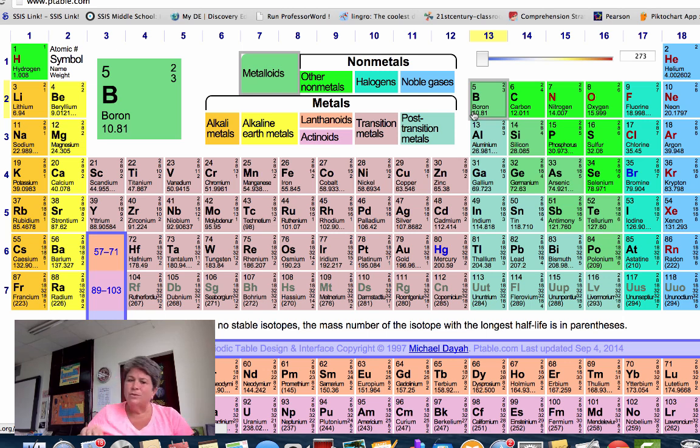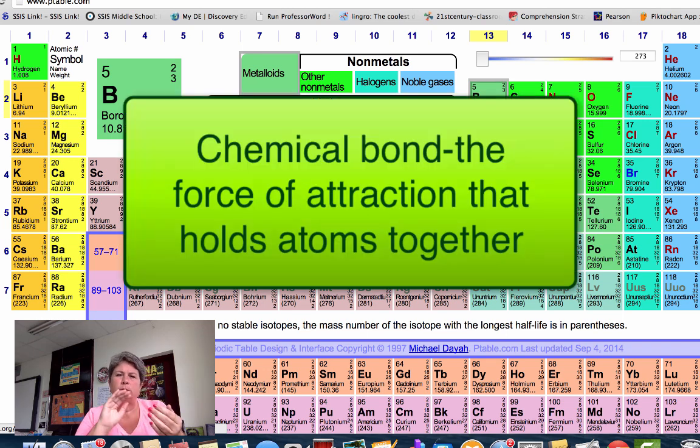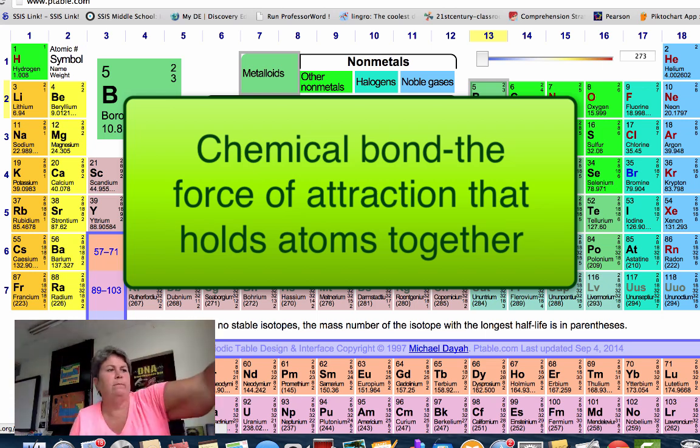A chemical bond is just the force of attraction that holds atoms together. Sometimes it's just two atoms being held together. Sometimes it's like 10, 20, 30 different atoms that are being held together. So the chemical bond is the force of attraction that holds those atoms together, whether it's two or 20 or 50, whatever.